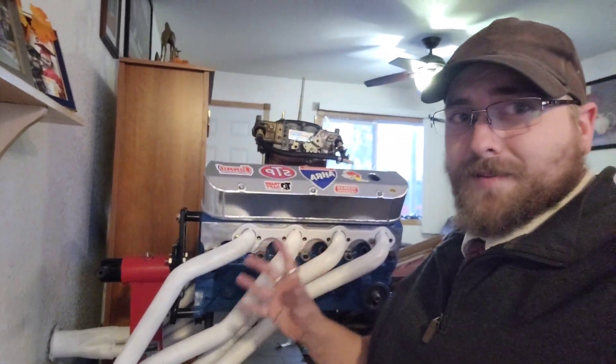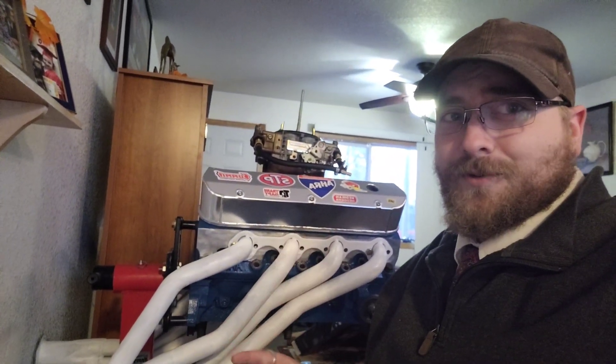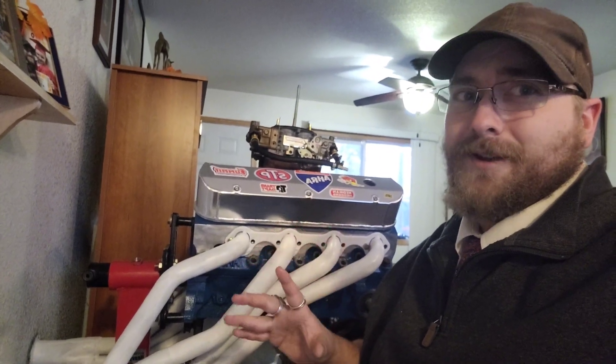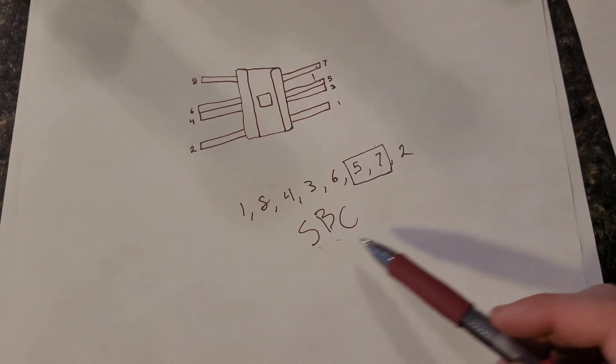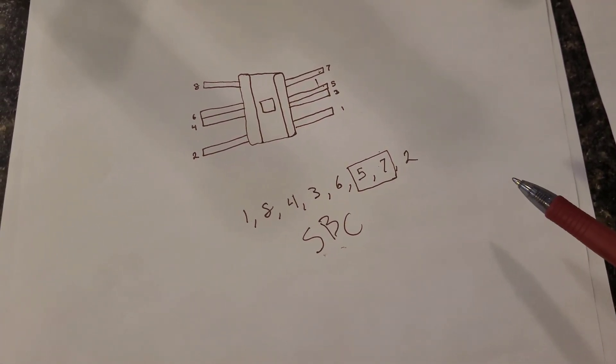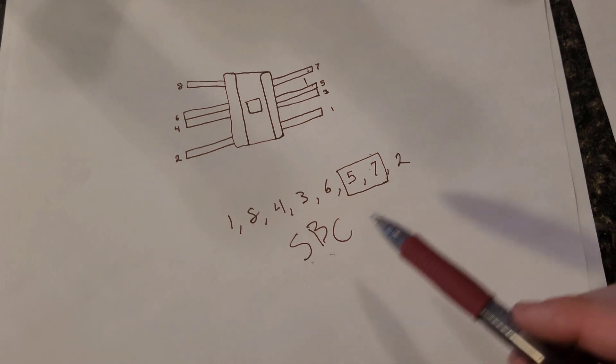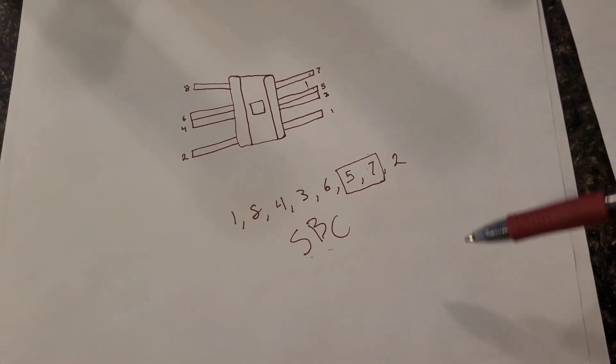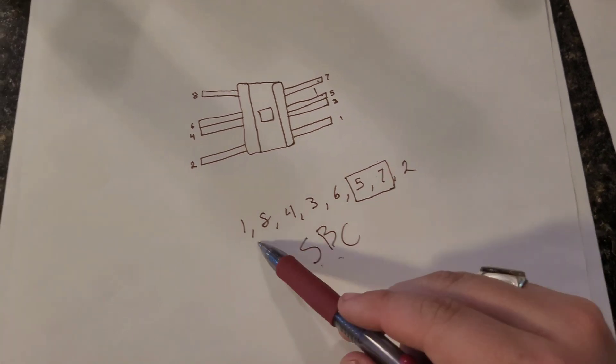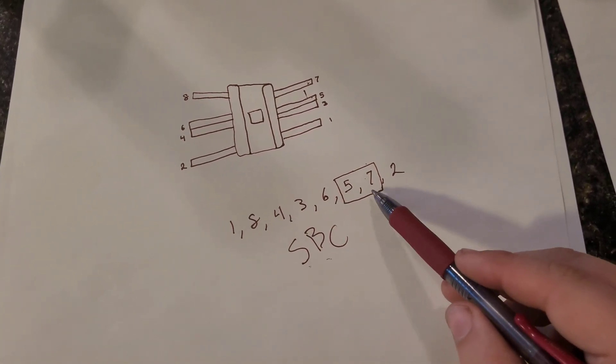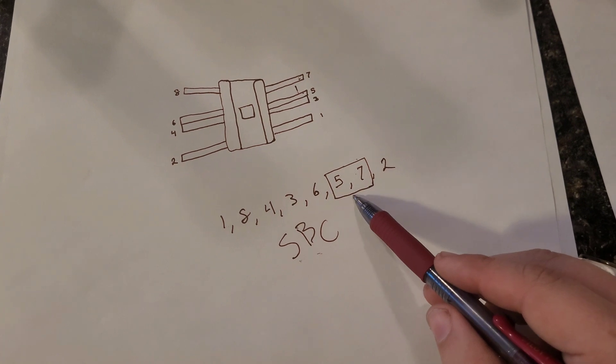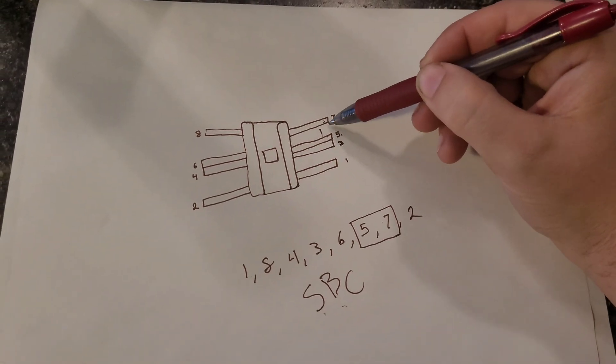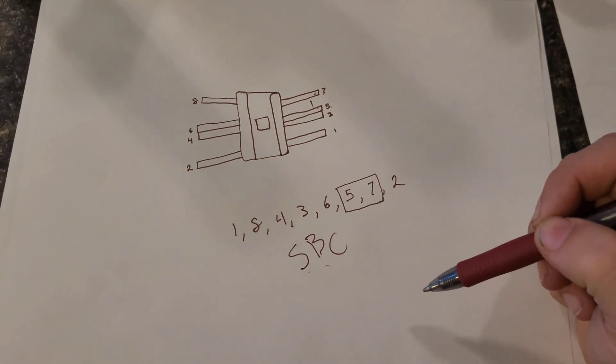But while that makes sense and that's exactly what you want to have happen, they don't take one key thing into account. So here we go. The biggest overlooked aspect of this whole debate, the firing order. This is a small block Chevy, but most every V8 is going to have this quirk. Notice in the firing order, 5 and 7 fire right after each other. 5 and 7 right here. So what's that going to do?